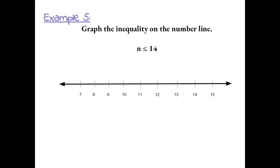Example 5. Graph the inequality on the number line. So N could be any number less than or equal to 14. That means we can put a closed circle at 14 because 14 is a solution to the inequality. 14 and any number less than 14 is a solution, and we can show that by shading all the numbers on a number line that are less than 14.